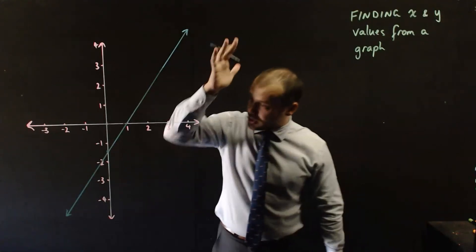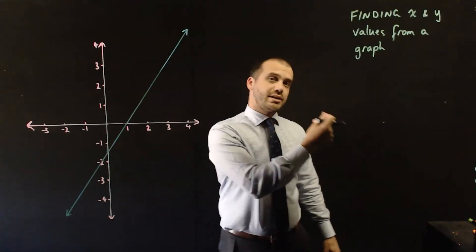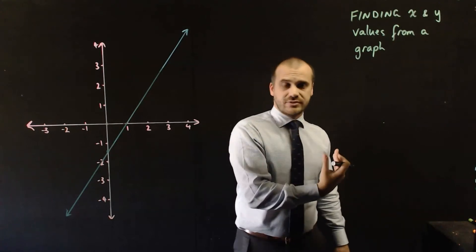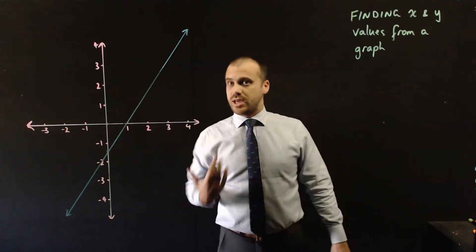So this one's going to be a fast one. We're going to take a look at this linear graph and we're going to find x and y values. If we know an x value, we can find a y value. If we know a y value, we can find an x value.